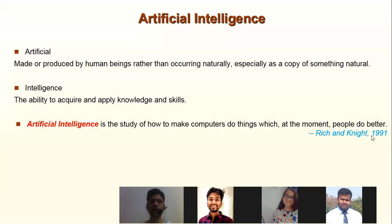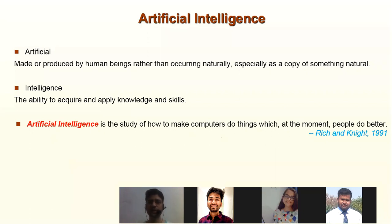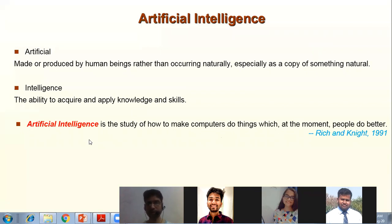Let's start artificial intelligence. We have context: something that is not natural; intelligence is solving a problem in a logical and rational way. What is artificial? — 'Made or produced by human beings rather than occurring naturally, especially as a copy of something natural.' And what is intelligence? — 'The ability to acquire and apply knowledge and skills.' What is artificial intelligence? — Rich and Knight: 'The study of how to make computers do things which at the moment people do better.'